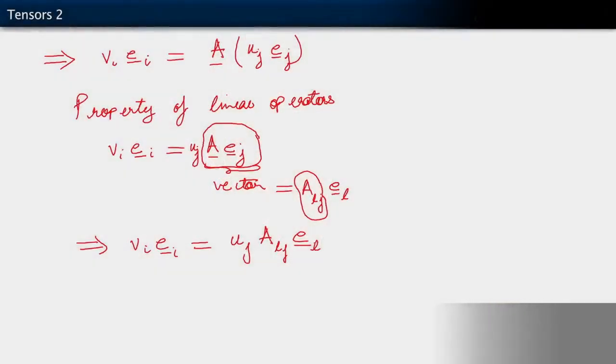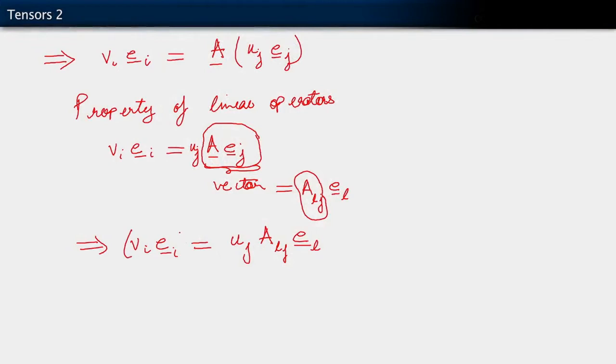What else can I do with it now? I want to be able to look at just the components that we have, the components of the vectors and this new object that I've introduced, A sub L J. The way I can do that is to dot this entire equation with some basis vector. And just to keep things clean and completely general, I'm going to use a new index. I'm going to dot all of this by some basis vector, let me say, E sub K.